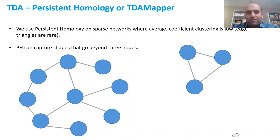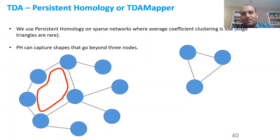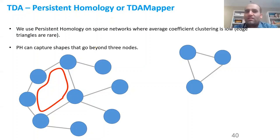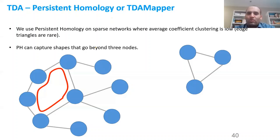Persistent homology can capture shapes that go beyond three nodes. A one-dimensional hole appears when you have a circular trading pattern in the network — in token networks, when you see a circle like this, there is a very good chance these nodes are manipulating the token price. So if you see a one-dimensional hole, it signals that people are creating artificial transactions to manipulate the price. Two-dimensional and higher-dimensional holes capture shapes in data that are local to some part of the network, allowing you to isolate and count them. Higher-order shapes can also capture specific behavior. We use Perseus for persistent homology.